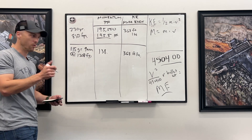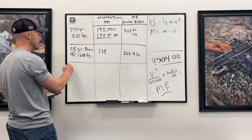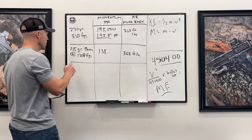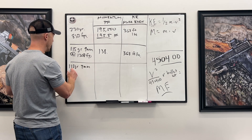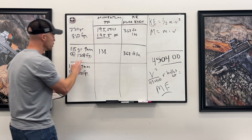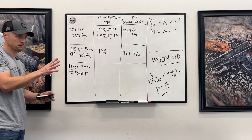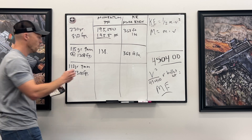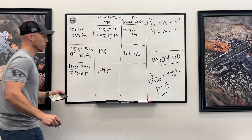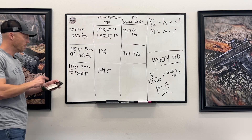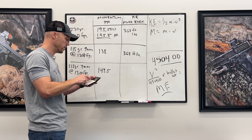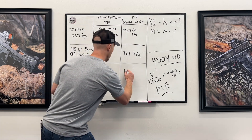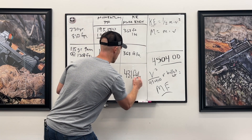Let's go to the famous Federal 115 grain +P+ law enforcement load from the 90s — 115 grain 9mm at 1300 feet per second. It's only 100 feet per second more than the previous load. Power factor: 1300 times 115 equals 149 — still nowhere near the .45. But muzzle energy: 1300 times 1300, divided by 450,400, times 115 — get ready — 431 foot-pounds!